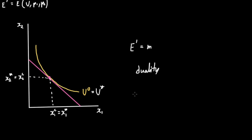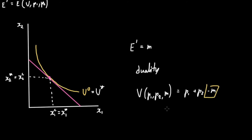We have a second method of finding the expenditure function, given that maximization and minimization are dual. We simply take the indirect utility function and solve for M. For example, if V — our indirect utility function — is a function of P1, P2, and M, say V equals P1 plus P2 minus M as an example, we simply isolate M. What we get is M as a function of U, P1, and P2, and this equals our expenditure function E prime.